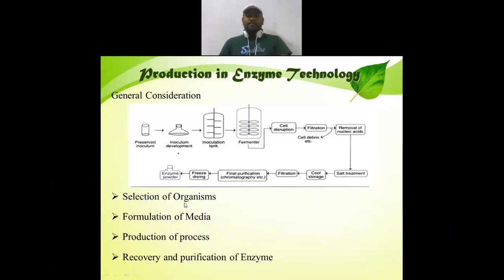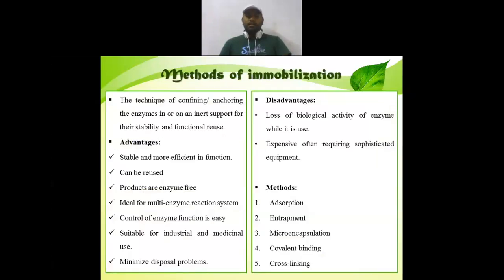The main steps involved in enzyme technology — or the parameters which affect the production of the enzyme — are: selection of the proper organism, formulation of the media, production process, and recovery and purification of the enzyme. These are the general considerations and factors which affect production in enzyme technology.